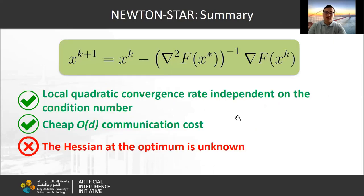Let's briefly summarize the properties of this algorithm. It has local quadratic convergence rate independent of the condition number, cheap communication cost, but it has only theoretical value since we do not know the Hessian at the optimum.